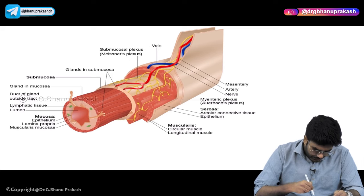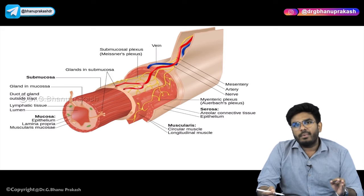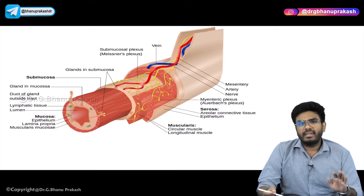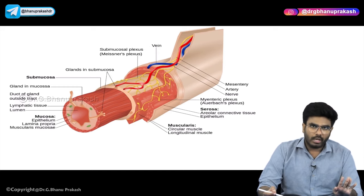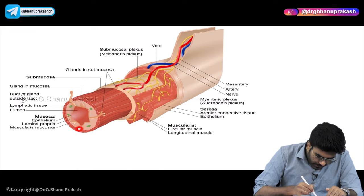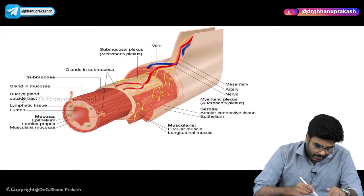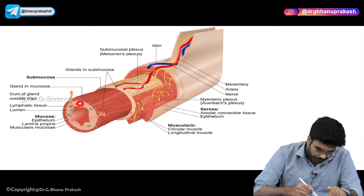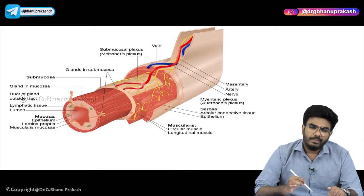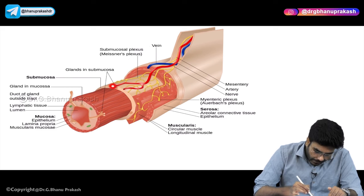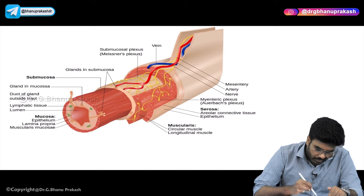Please concentrate here. Your GIT is made up of four layers - there are four layers in the GI wall. The innermost layer, this is the lumen where the food passes. The innermost layer is called mucosa. Surrounding the mucosa you have submucosa. So mucosa, submucosa.